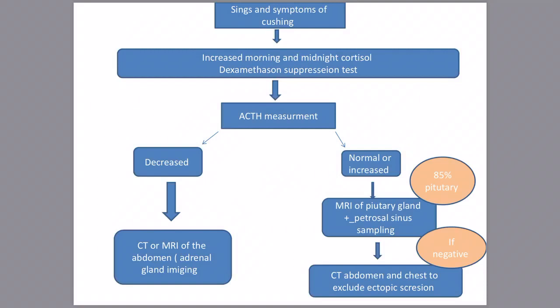If ACTH is increased or normal, MRI of the pituitary gland is performed, as 85 percent of Cushing's cases originate there. This may be supplemented by inferior petrosal sinus sampling, where venous blood from the petrosal sinus — the venous drainage of the pituitary gland — is sampled to assay ACTH levels.